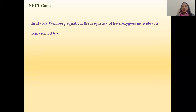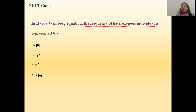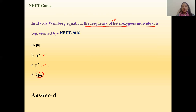The first question asks: in the Hardy-Weinberg equation, the frequency of heterozygous individuals is represented by which of the following — pq, q², p², or 2pq? q² represents the percentage of individuals which are homozygous recessive, p² represents homozygous dominant individuals, and 2pq represents the frequency of heterozygous individuals in a population. So the answer is 2pq. This question was asked in NEET 2016 — sometimes a very simple, direct equation-based question can be asked.